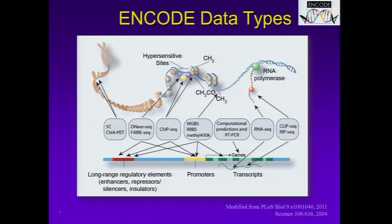This slide is a cartoon of the various data types being generated by the ENCODE resource. The consortium uses a number of high-throughput technologies that are primarily sequence-based, including, for example, ChIP-seq and RNA-seq, to measure a number of different biochemical properties of the genome, including mapping of transcription factor binding sites, histone modifications, DNA methylation, and RNA transcription. All of these data are then mapped into the genome to map transcripts, genes, promoters, and putative regulatory regions such as enhancers.